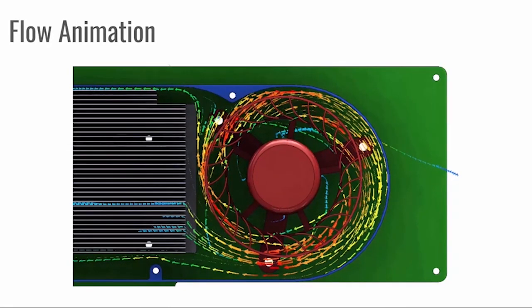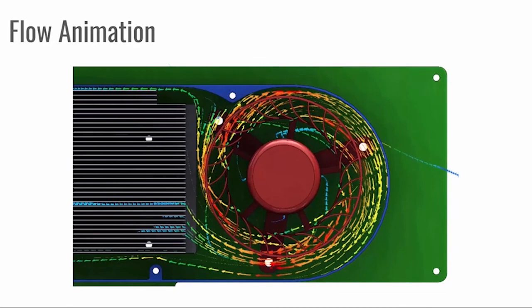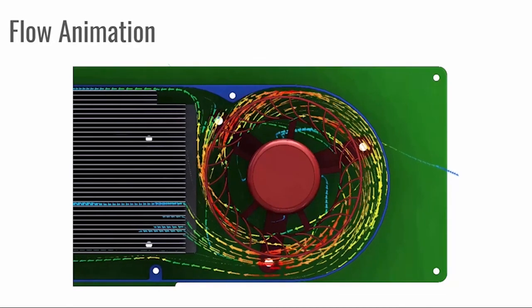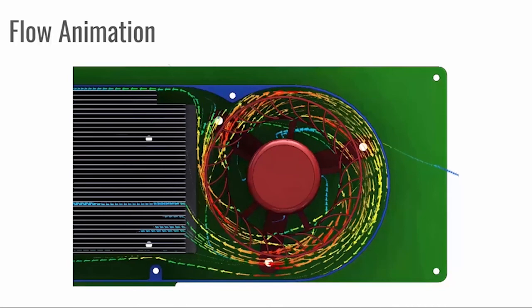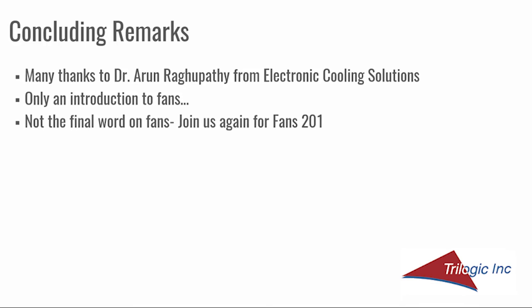The flow animation shows that the heatsink fans appear too close to the blower to properly distribute the flow. Perhaps in a future webinar, the blower-heatsink combination will be optimized and results and methods shared. That concludes the topics set out to cover. Thank you very much for attending. Thanks also to Dr. Raghupati and Electronics Cooling Solutions for discussing how fans are experimentally characterized. There is much more to cover when discussing fans for electronics cooling applications, and we hope you'll join us again when we dig deeper into fans.